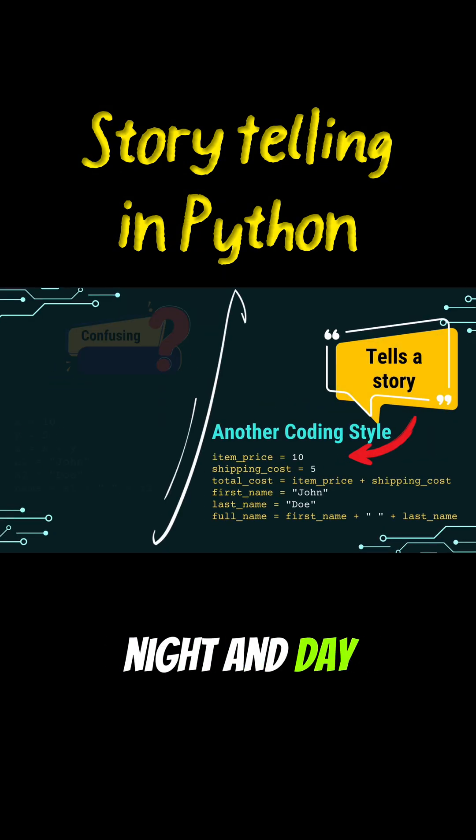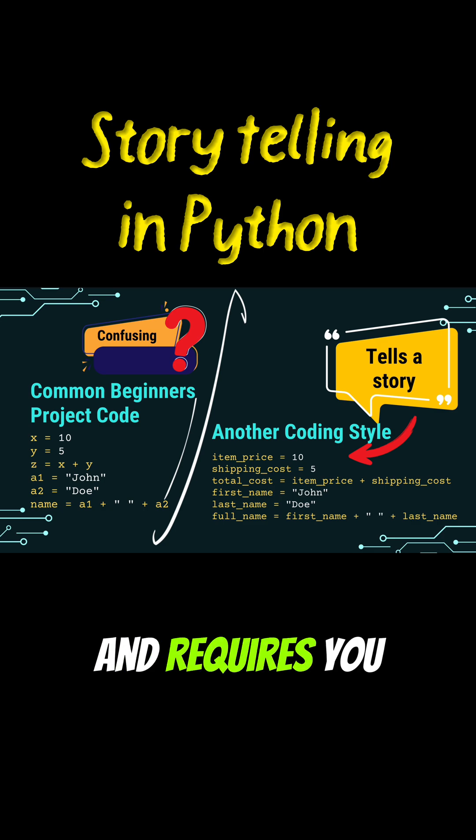Putting them side by side, the difference is clear. The code on the left is confusing and requires you to guess or remember what each variable holds. The code on the right, the one that uses the descriptive coding style, tells a story.